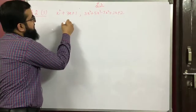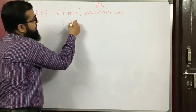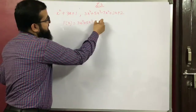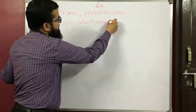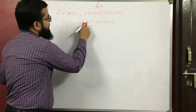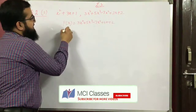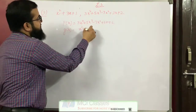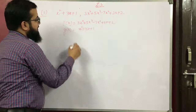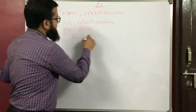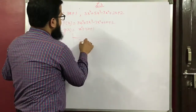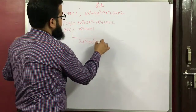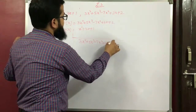Second problem: p(x) = 3x⁴ plus 5x³ minus 7x² plus 2x plus 2, and g(x) = x² plus 3x plus 1. We need to divide p(x) by g(x).